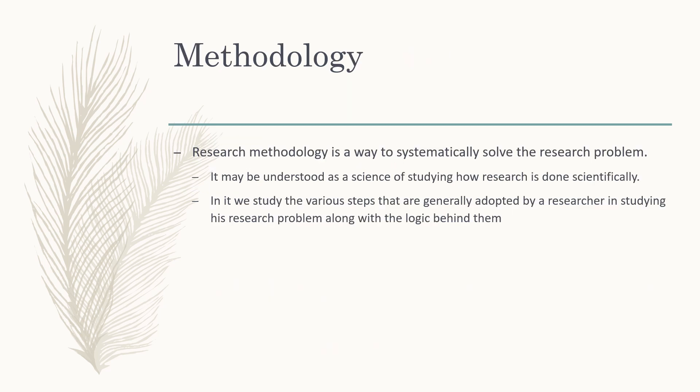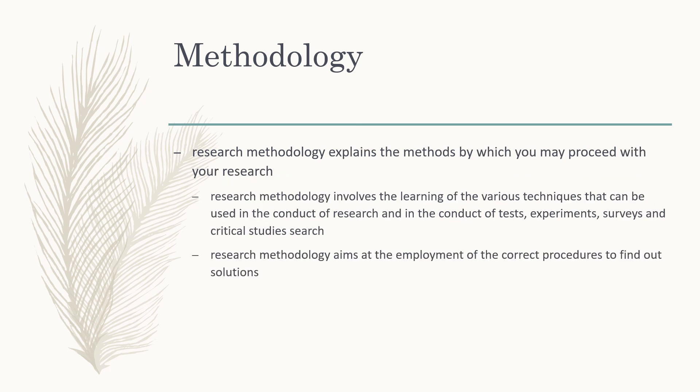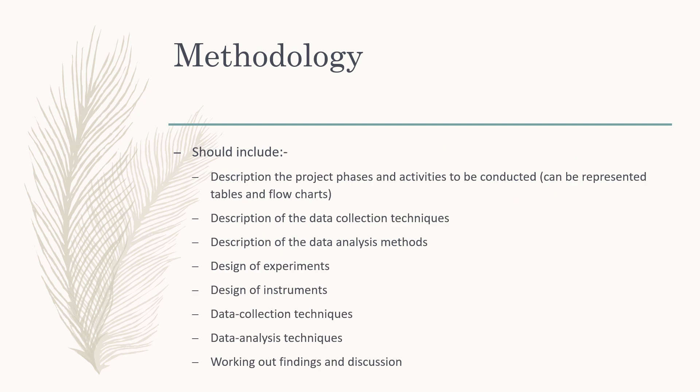Once you have finished your literature review, you can write your methodology. Research methodology is a way to systematically solve the research problem. It may be understood as the science of studying how research is done scientifically. We study the very steps generally adopted by a researcher in studying the research problem along with the logic behind them. Research methodology explains the methods by which you may proceed with your research. This can involve any test, experiment, or survey — it depends on the nature of your research and what you are trying to achieve. Methodology should include a description of the project phases and activities, which can be represented in tables or flowcharts.